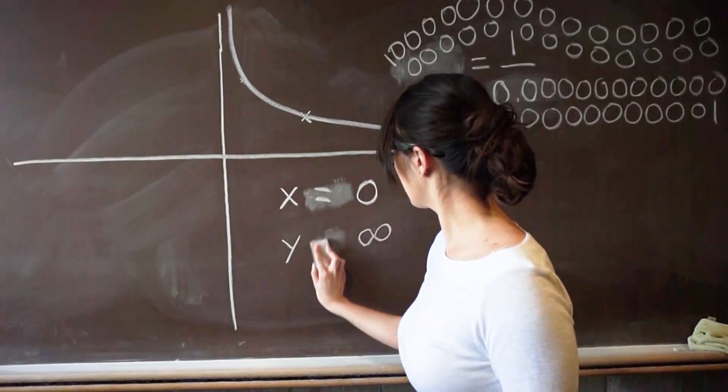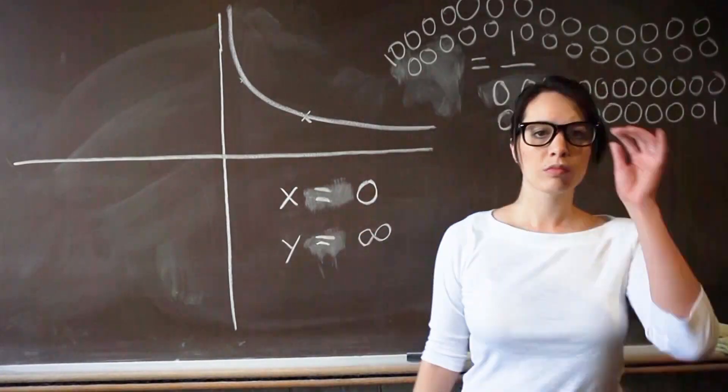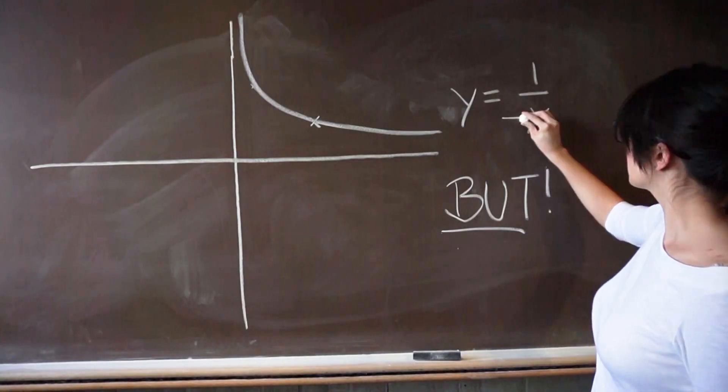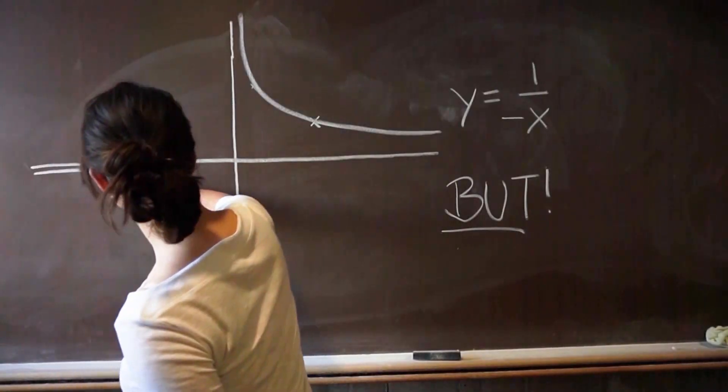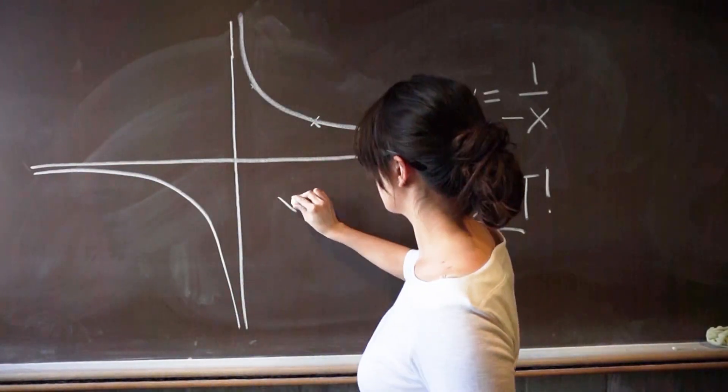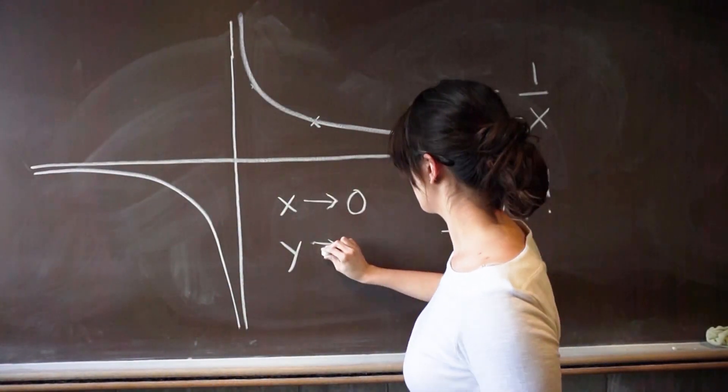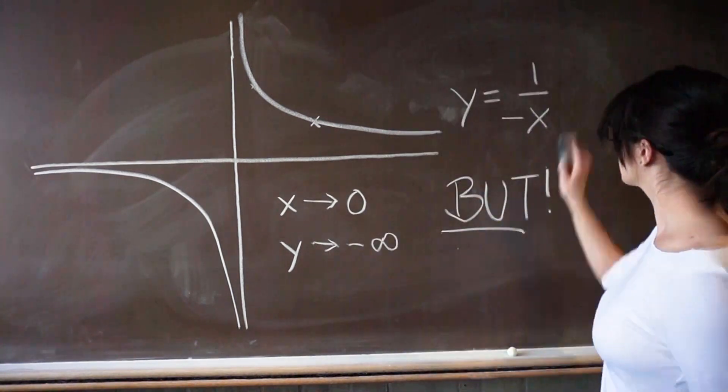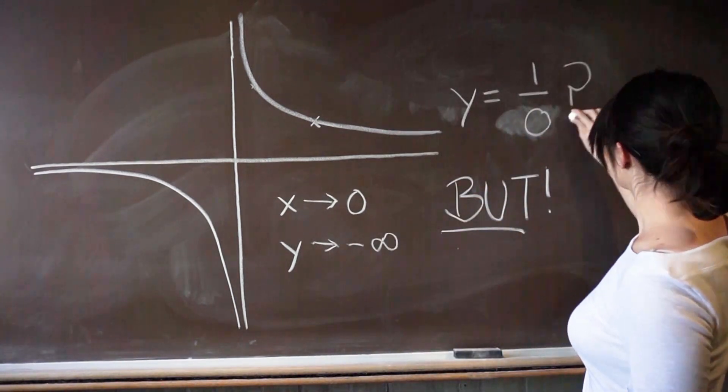It's tempting to just say that when x equals zero, y equals infinity. But what about when x is negative? If we plot y for negative x, we see that as x approaches zero, y goes to negative infinity. So what is y at x equals zero? Well, mathematicians don't know. They couldn't come up with a good answer, so we just say it's undefined. This is where our understanding of mathematics breaks down — we call it a singularity.